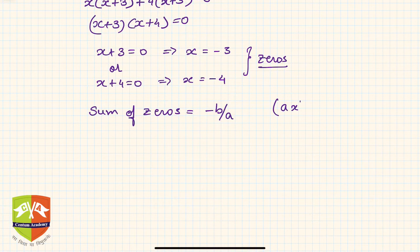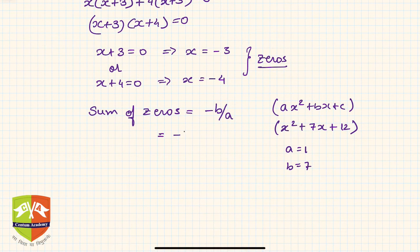From the polynomial ax² + bx + c, a is the coefficient of x² and b is the coefficient of x. Our given polynomial was x² + 7x + 12. Clearly, a = 1 and b = 7. Hence, sum of zeros = -b/a = -7/1 = -7.